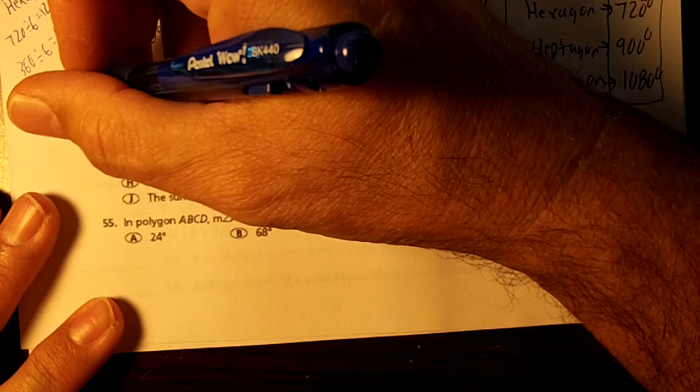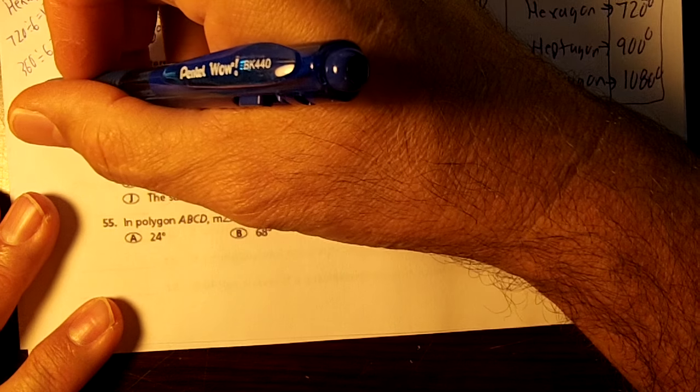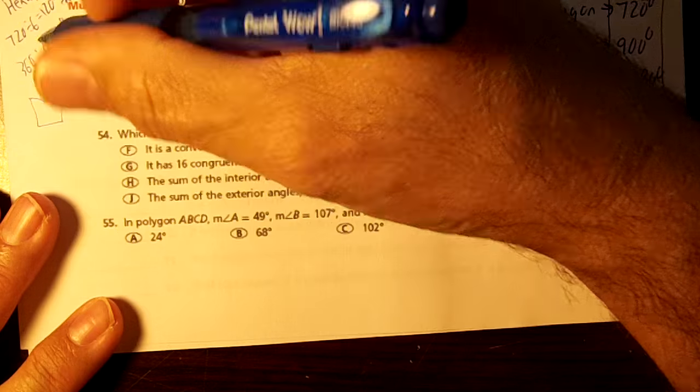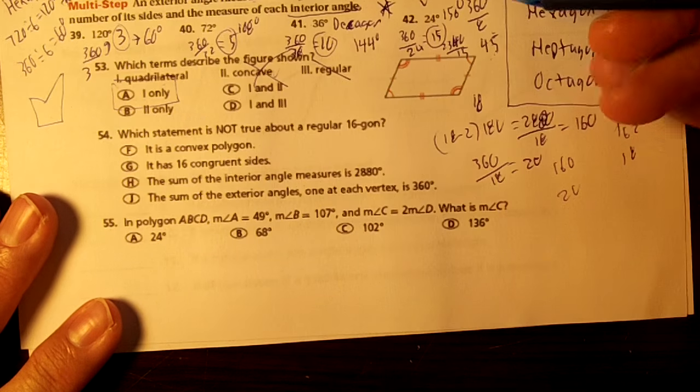A concave is a polygon that looks like this. That's concave. That won't be on your test, okay?